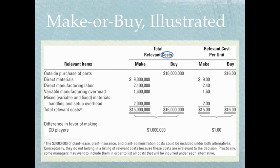Notice we're not talking about revenues here. Under most circumstances, whether we decide to make or buy a product, we're going to charge the same price when we sell it — so that's not relevant to this decision. If we buy the product, we'll pay $16 million; if we decide to make it, it will cost us $15 million. The difference is $1 million in favor of making it, so we would reject the offer from the seller and continue to make this product ourselves.